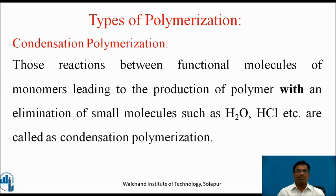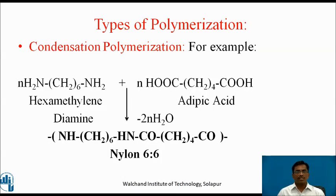Second type: condensation polymerization. Those reactions between functional molecules of monomers leading to the production of a polymer with elimination of small molecules such as water, hydrochloric acid, etc., are called condensation polymerization. Example: hexamethylene diamine reacts with adipic acid to give nylon 6-6, with the formation of a small by-product molecule — water. This loss of the water molecule is characteristic of condensation polymerization.